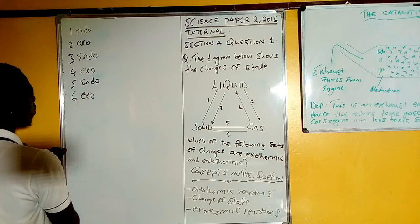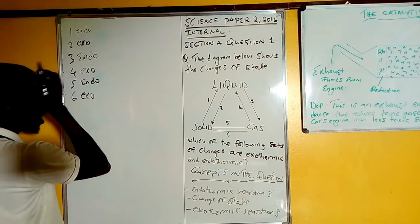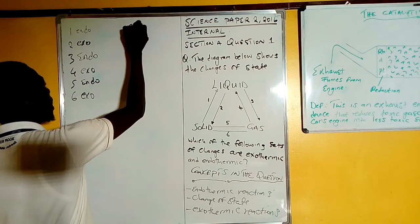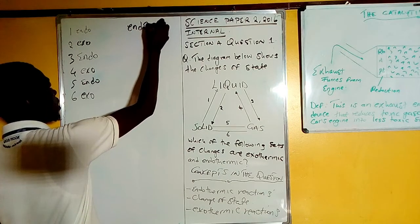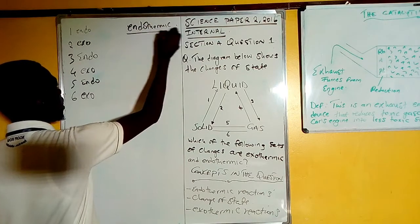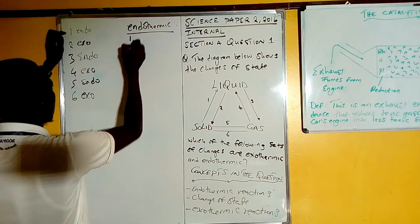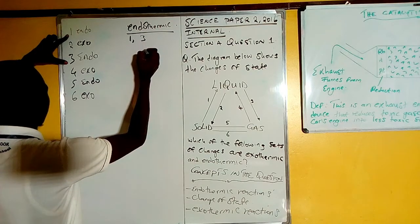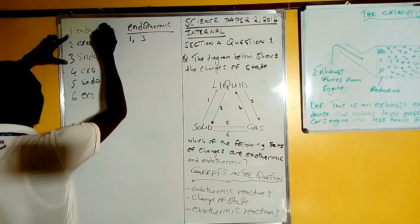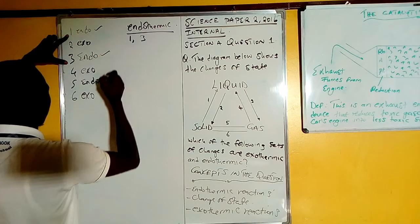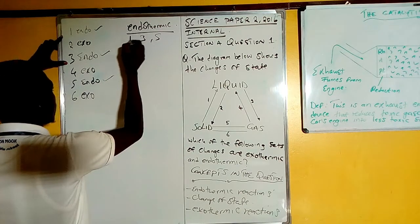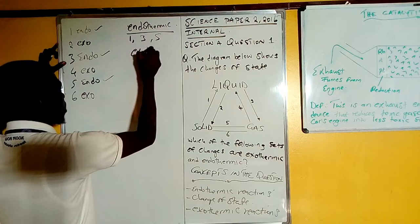We can now summarize by categorizing them. We're going to put the endothermic ones first. The endothermic reactions here we have number one, which is endo, then we have number three, and we also have number five. So 1, 3, 5, that is endo. Then when you talk about exothermic reactions, we have 2, 4, and 6.